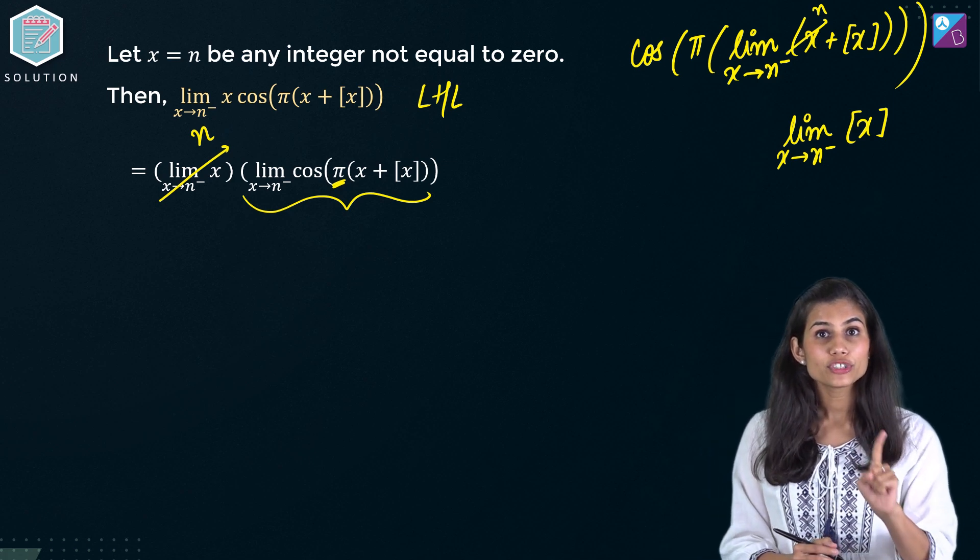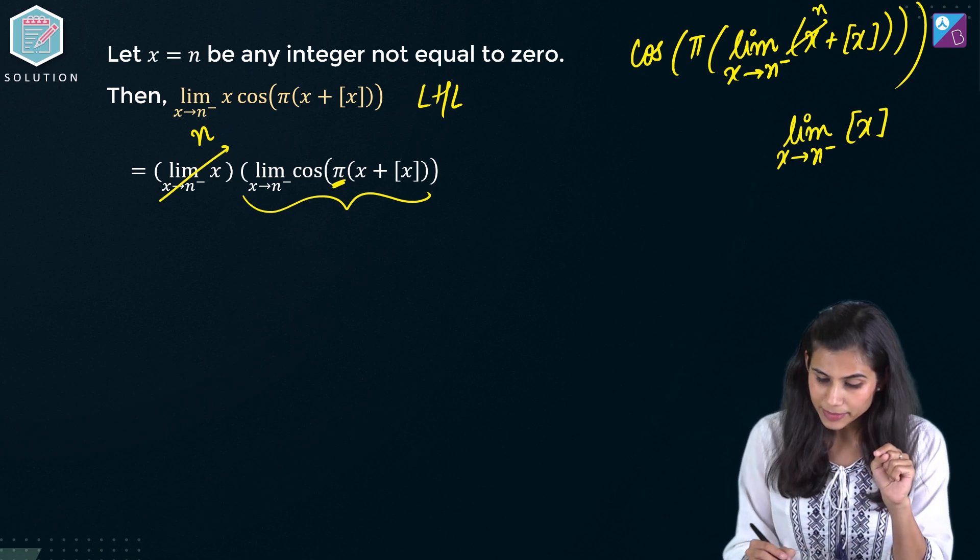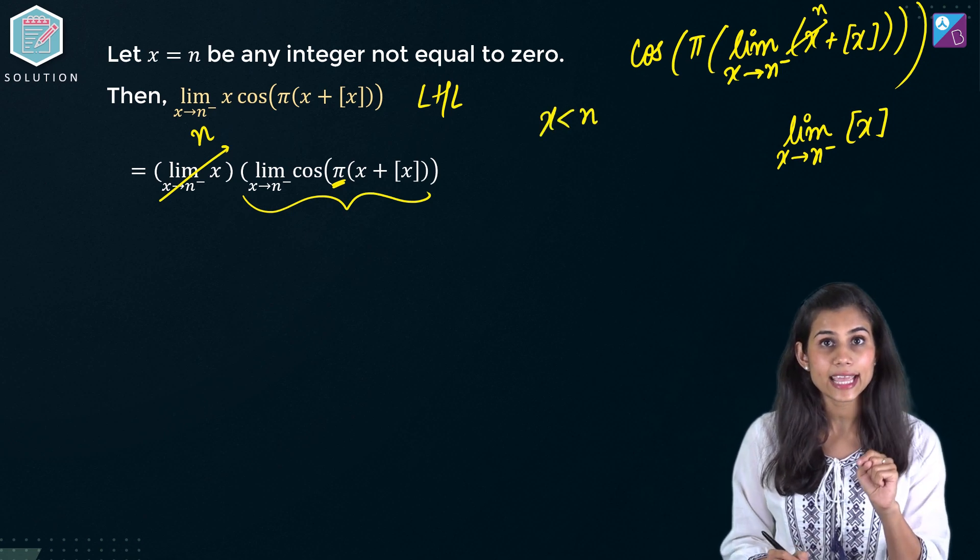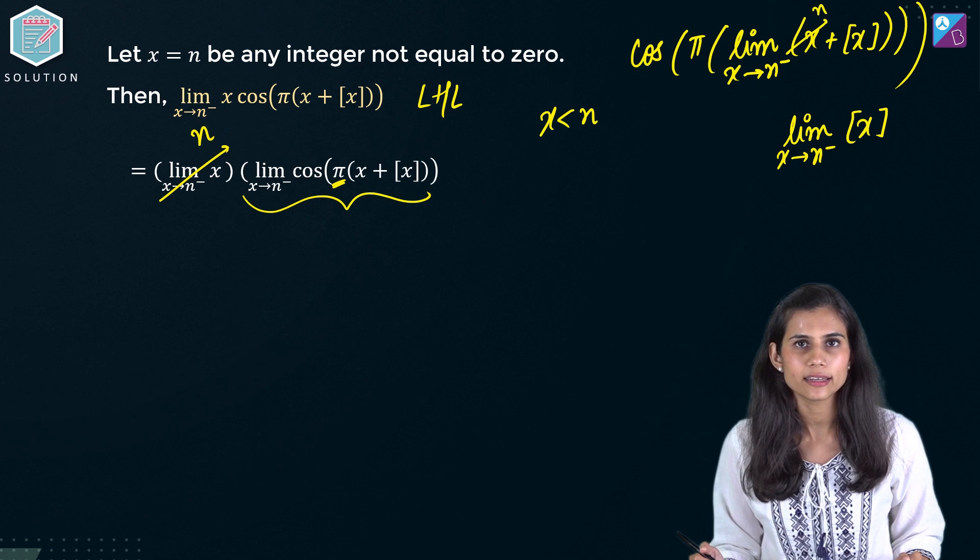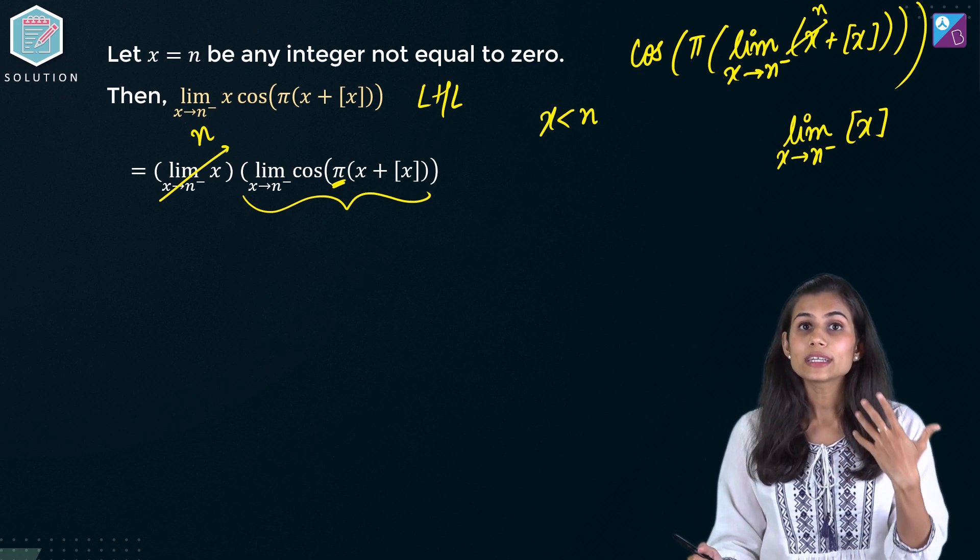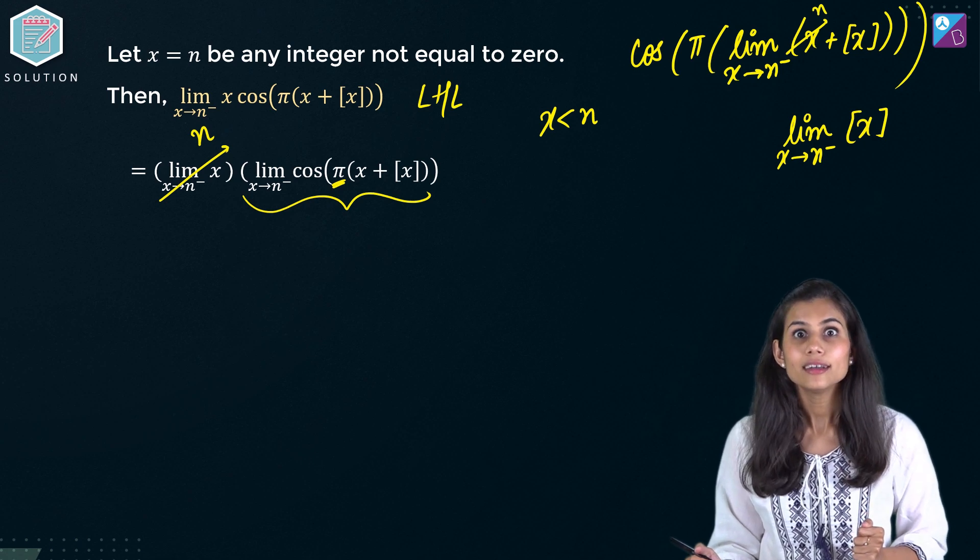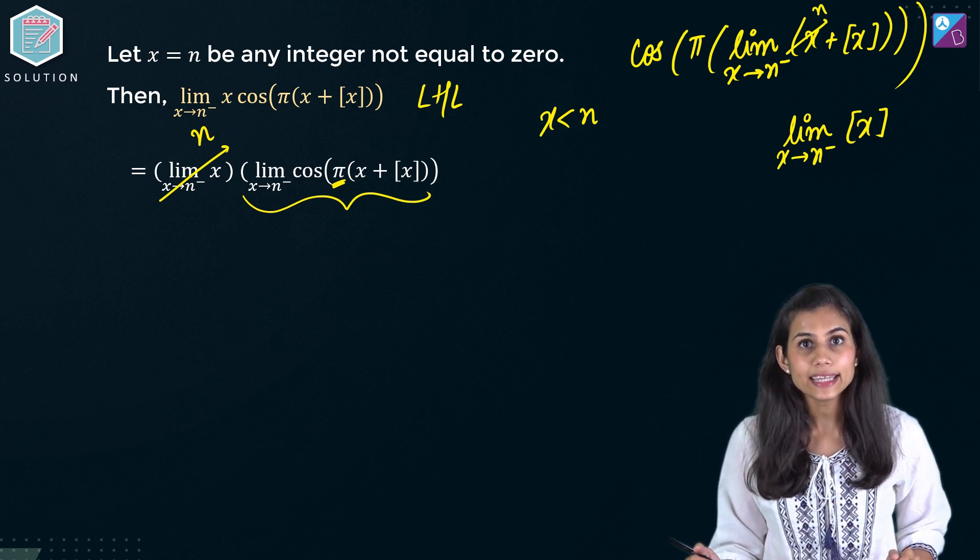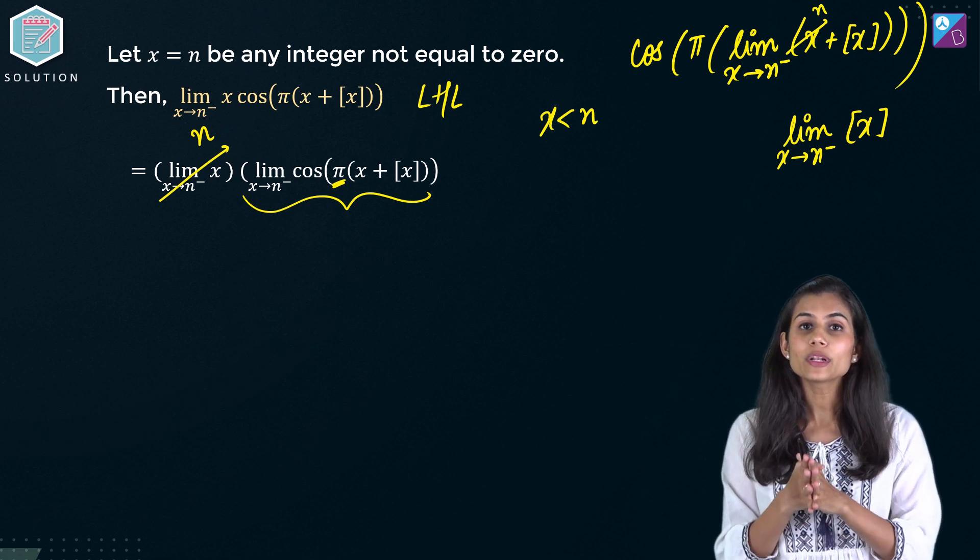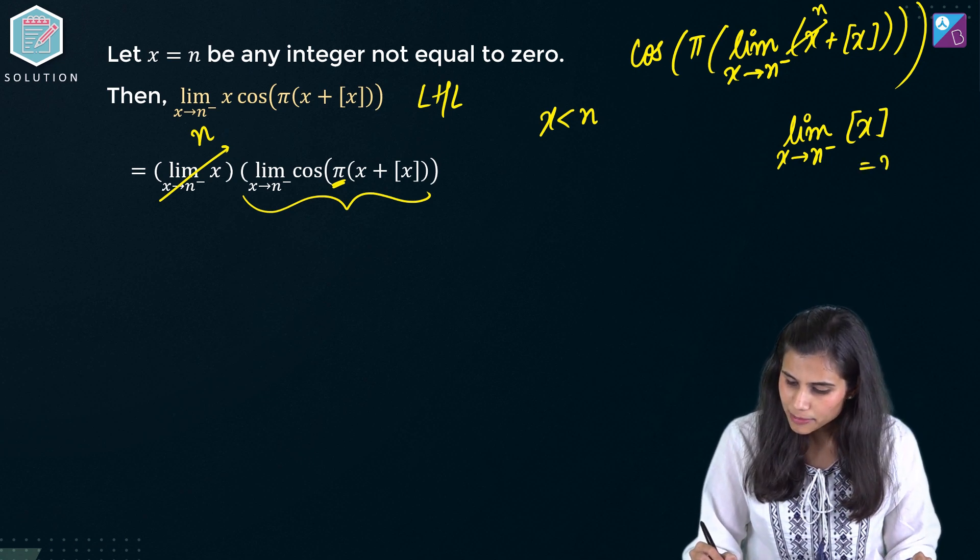See x is approaching to n from the negative. That means x is strictly less than n but very very close to n. So what are those two consecutive integers between which x is sitting? Yes n minus 1 and n. So gif of x will come out to be yes n minus 1.